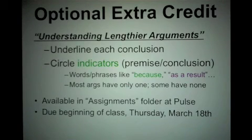Now I've offered an optional extra credit assignment on the course website. If you go to pulse and you go to the assignments folder, there is this extra credit assignment called understanding lengthier arguments. There are, I think, 11 arguments there. And for the first nine of those arguments, the directions ask you to underline each conclusion in that argument